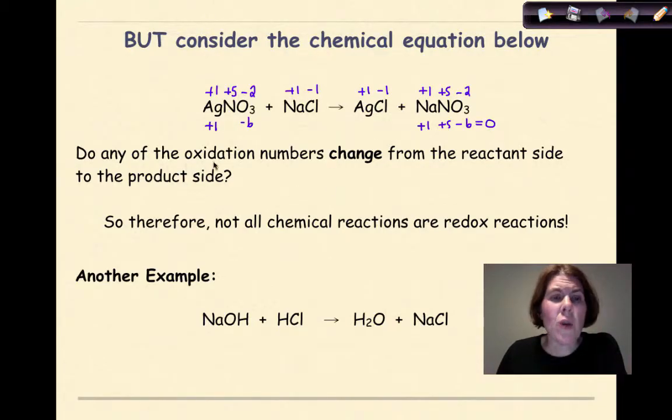When we look at this, we have to ask ourselves the question: do any of the oxidation numbers change from the reactant side to the product side? Silver on the reactant side is plus one, plus one. Nitrogen, plus five, plus five. Oxygen, negative two, negative two. Sodium, plus one, plus one over on the product side. Chlorine, minus one, minus one over on the product side. We would not classify this as a redox reaction. There is no change in oxidation numbers for any of the elements as they go from reactants to products. Therefore, not all chemical reactions are redox reactions.